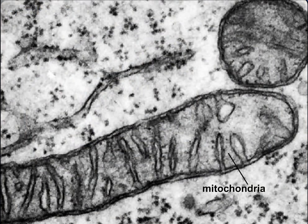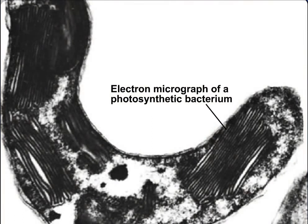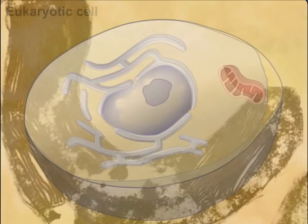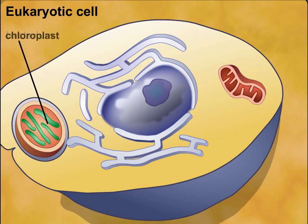Photosynthetic bacteria use photosynthetic pigments embedded in internal membranes to derive energy from sunlight. These bacteria may have come to live within early eukaryotic cells, leading to the evolution of chloroplasts.